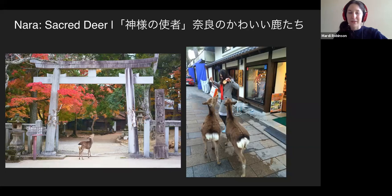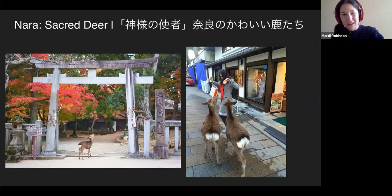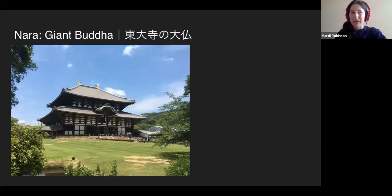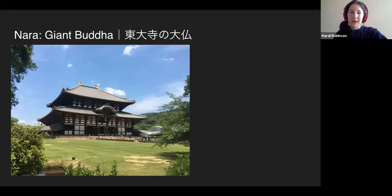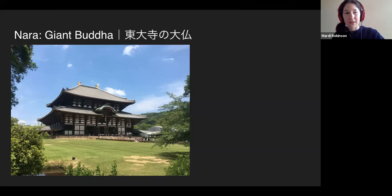Nara is also famous for its deer — very cute and very greedy, and you can feed them. But the most famous place in Nara is the temple called Todaiji Temple. It's actually the largest wooden structure in the world, and it's only one third the size of the original — and it's still the largest wooden structure in the world, which is just crazy. Absolutely massive. This temple is from 752.